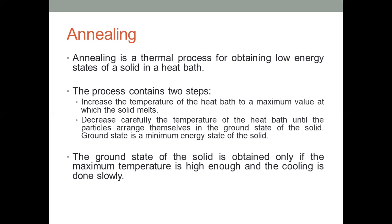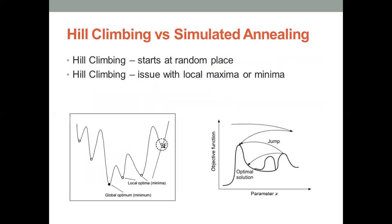We use the same process here: increase the temperature to a maximum so the solid melts, then decrease it to a ground value so particles arrange themselves into a perfect solid state. In hill climbing, we randomly start at a place and proceed with the next possible neighborhood — maximum or minimum value depending on whether we want to maximize or minimize. The problem with hill climbing is it gets stuck at local optima or local maxima.